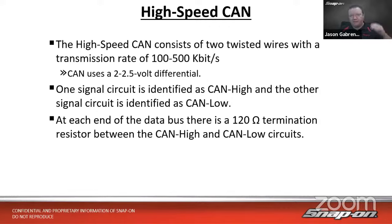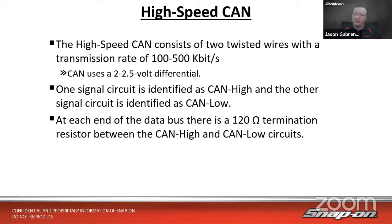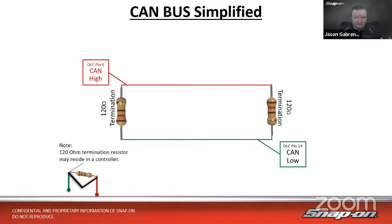CAN uses a two to about two-and-a-half volt differential, with an acceptable range for the data signal in voltage. One signal circuit is identified as CAN high and the other as CAN low — CAN high is on pin 6 at the DLC and CAN low is on pin 14. At each end of the data bus, there is a 120-ohm termination resistor between the CAN high and CAN low circuits. That essentially works as a stop sign — network traffic flows around the network, and when it hits that 120-ohm resistor, it knows that's the end of the line.